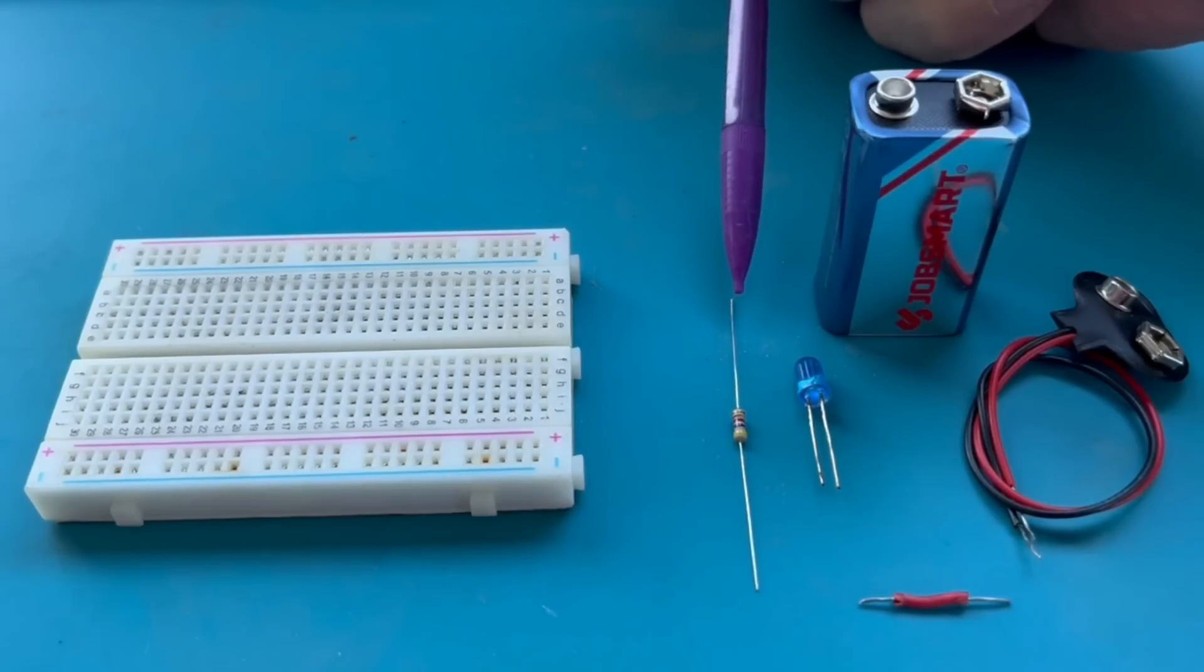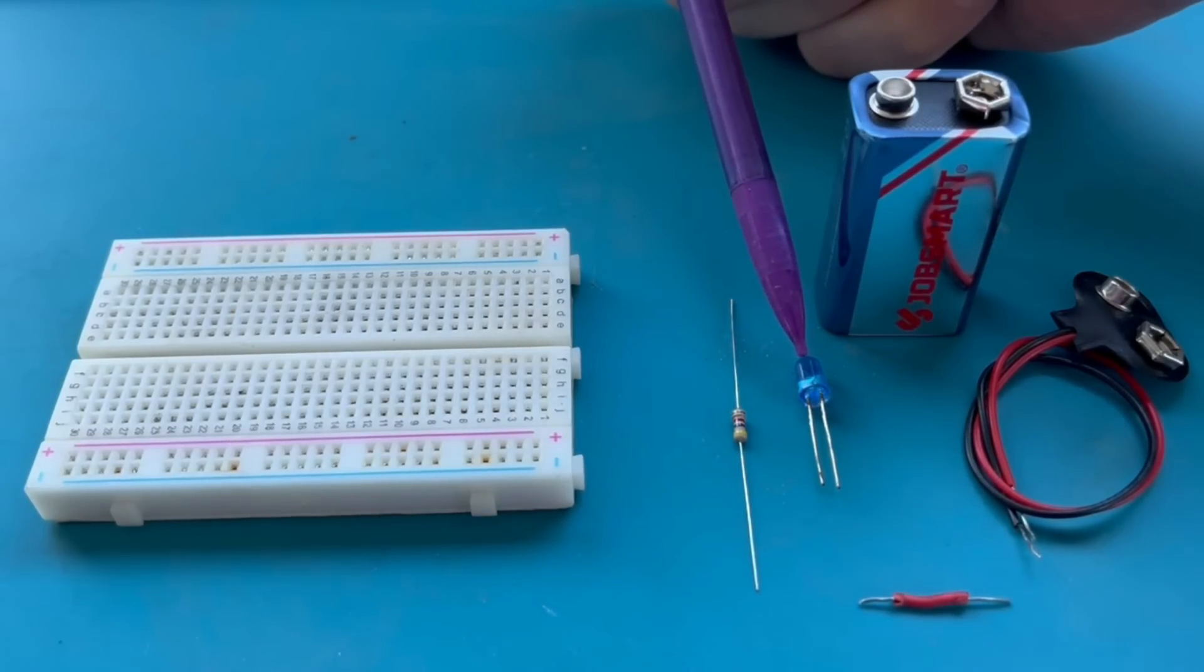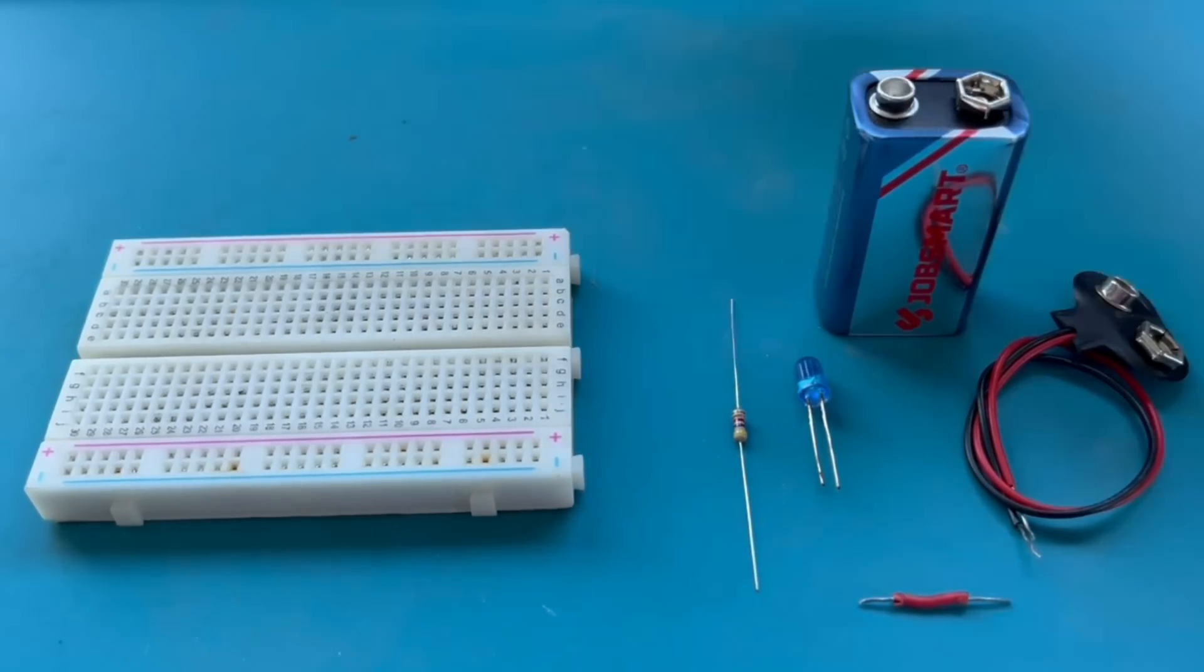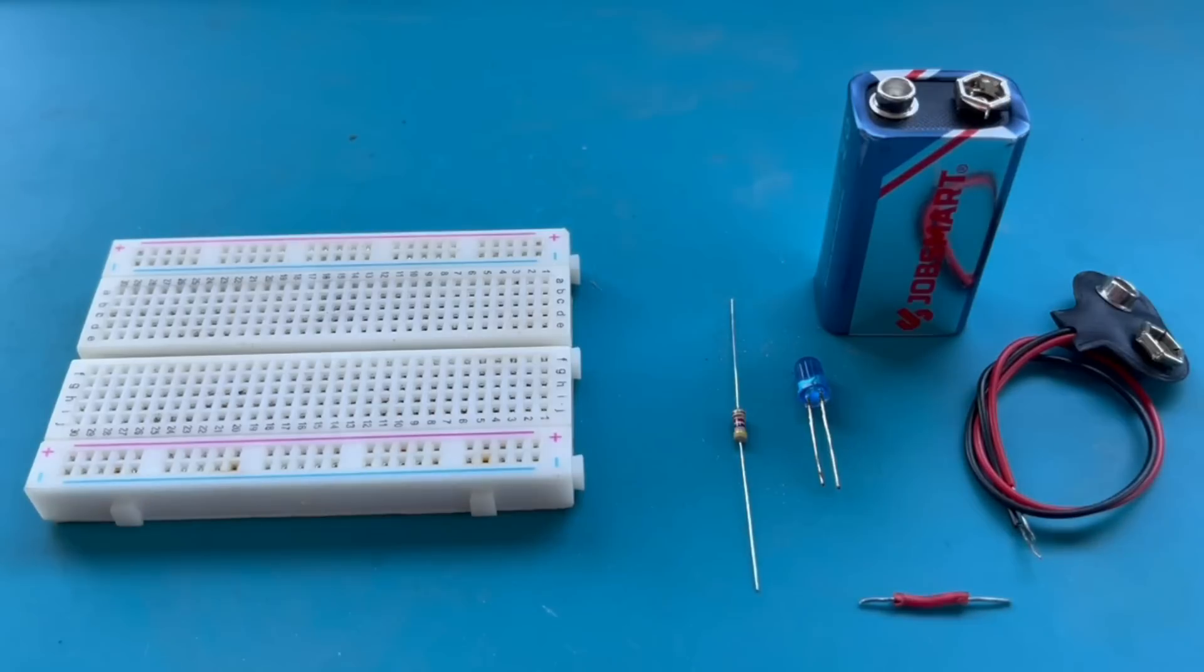We have one resistor, one 5-millimeter blue LED, a 9-volt battery, and a 9-volt snap connector that we'll use for the power. We're going to use one little tiny jumper wire here. You'll see where that goes in a minute.